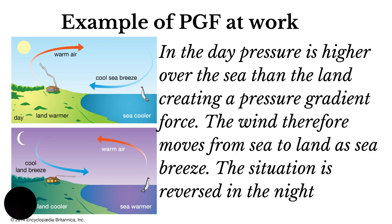In that case, we call it a sea breeze because we name the wind according to the direction from which it blows. At night, the land will lose its heat while the sea will retain its heat, so there is a reversal in the pressure gradient. The water being warmer will have lower pressure; the land being cooler will have higher pressure. So the wind will blow from the land where pressure is high to the sea where pressure is low — and in this case, because it's blowing from land to sea, we have a land breeze.